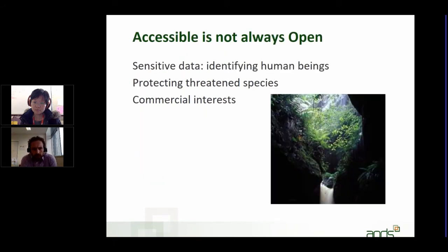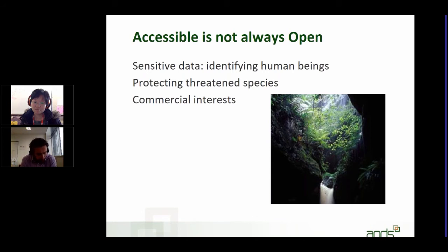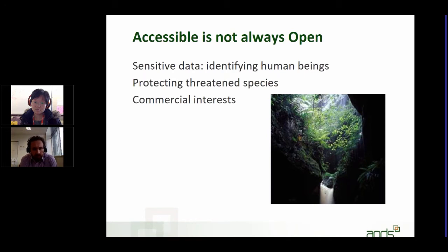Just to reinforce that accessible does not always have to be open: there are clear cases in which data cannot be made openly available. An obvious example is where data refers to human beings and specific characteristics such as information about their health, income, religion, attitudes, or political persuasion. That's not the sort of information you can make publicly available.